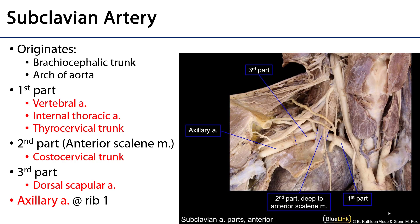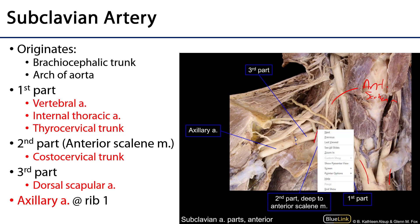Let's start with the subclavian artery. The subclavian artery on the right side originates in the brachiocephalic trunk. On the left side it's typically a direct branch of the arch of the aorta. We can divide the subclavian artery into three parts. The first part is medial to the medial edge of the anterior scalene muscle. The second part is deep to the anterior scalene muscle, and the third part is lateral to the lateral edge of the anterior scalene muscle out to the border of the first rib.